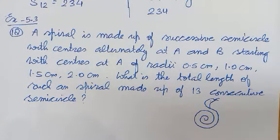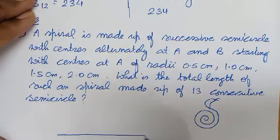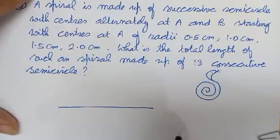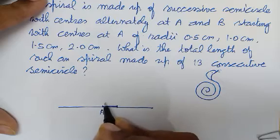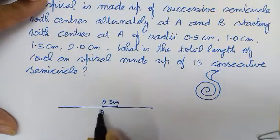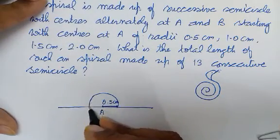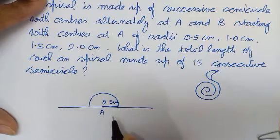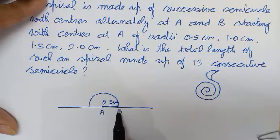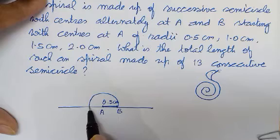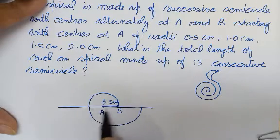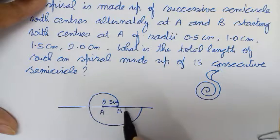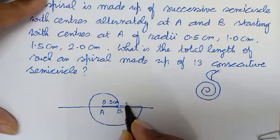Ek spiral bana ya gaya hai jisme question figure diya hua hai. Pehla jo bana, woh center A lekar 0.5 cm radius lekar ek semicircle bana lo. Ab yeh semicircle ban gaya, to iske baad B ko ab center lijiye. Agar aapne center shift kar diya A se B, to ab yahan 0.5 aur 0.5, that is 1 cm length ho jaayegi.